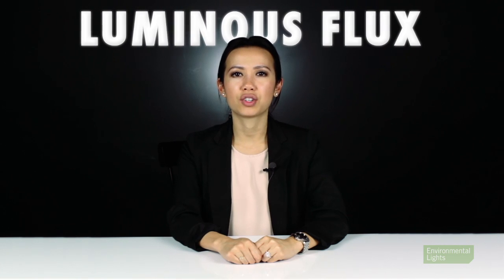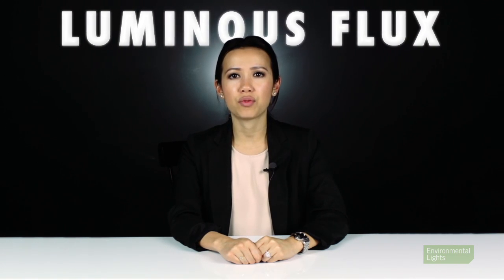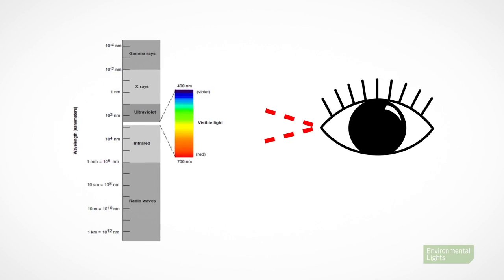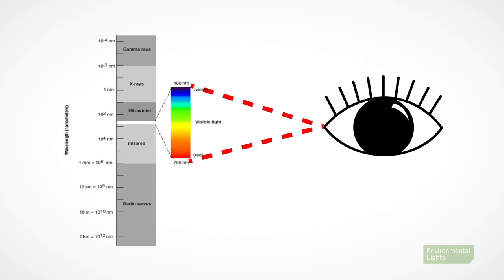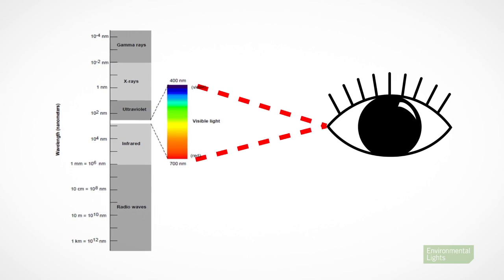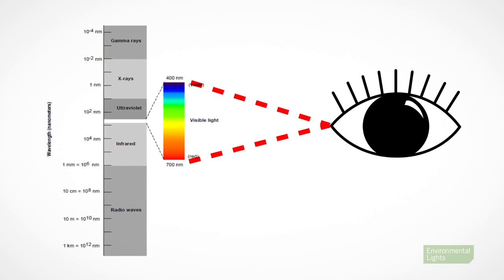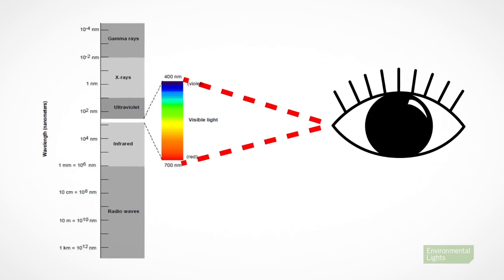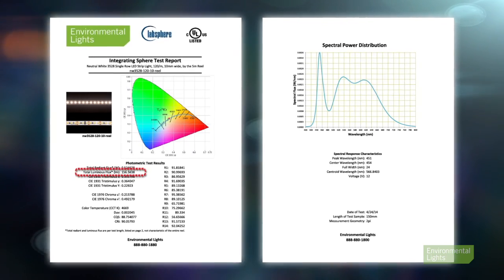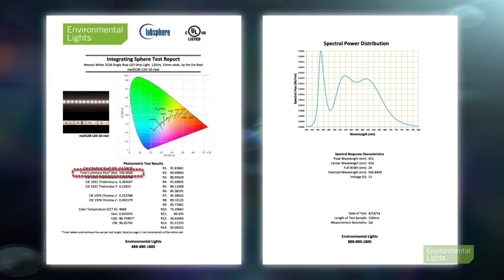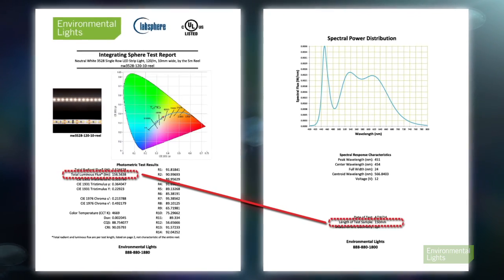Luminous flux is a measure of luminosity, which is the perceived brightness of light. Luminosity reflects the differences in sensitivity of the human eye to various wavelengths of light along the electromagnetic spectrum. The test reports show lumens per test sample length, which is listed at the end of the report.